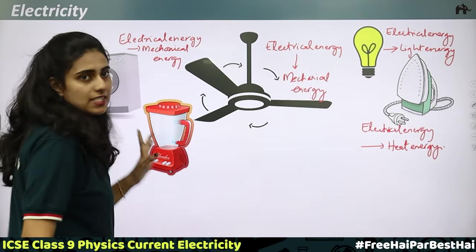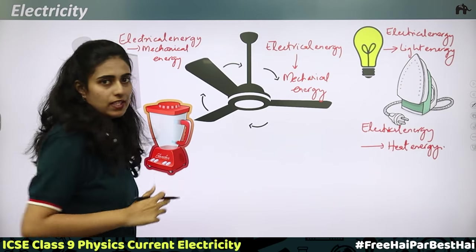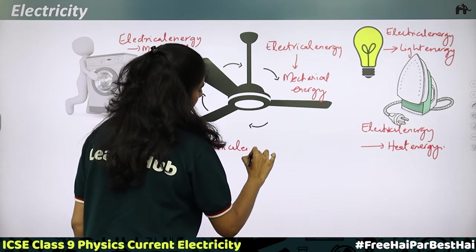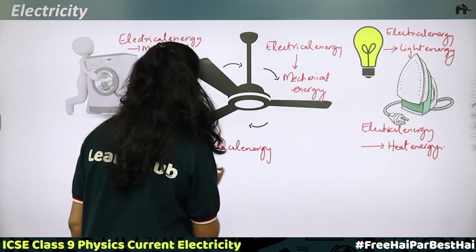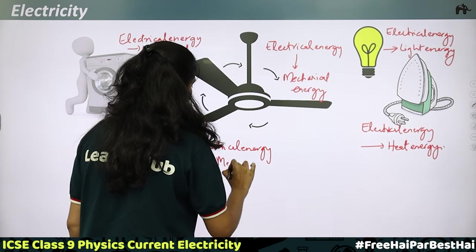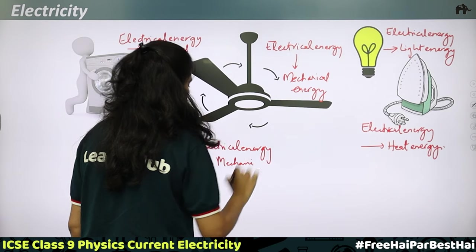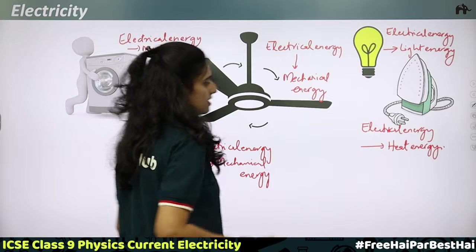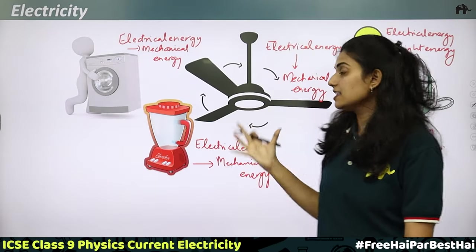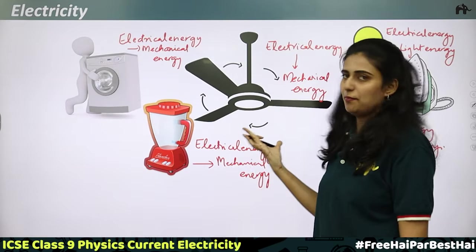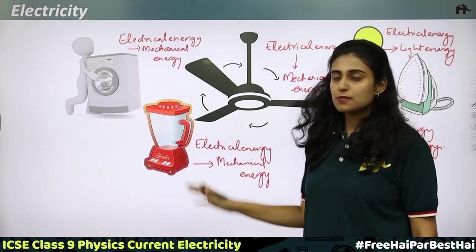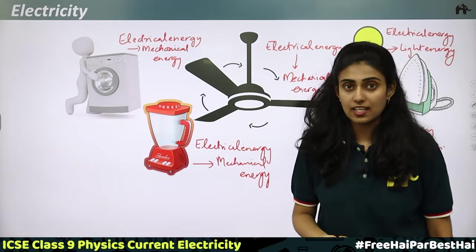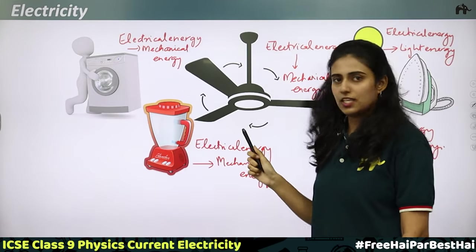In the case of a mixer grinder, electrical energy is getting converted into mechanical energy — the blades rotate. So, we have seen many devices, and in all these devices there is an energy conversion happening. All of them work based on electricity. Only if electrical energy is there will these devices be working.